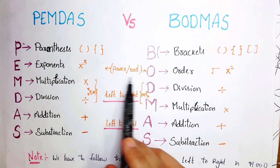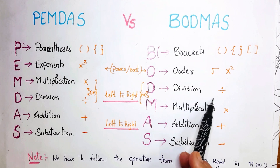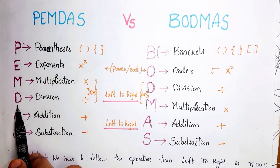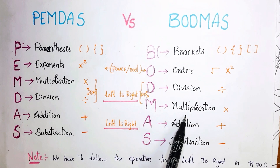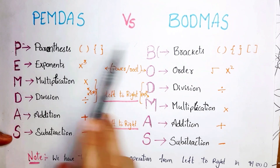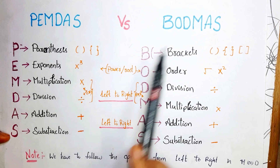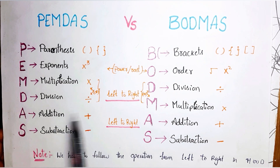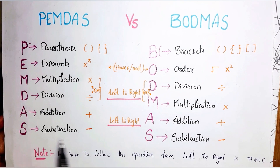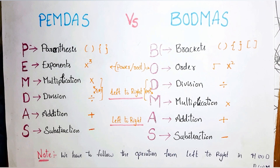So Order covers both powers and roots. M stands for Multiplication. Then D stands for Division. In BODMAS, after Division we get Multiplication — don't get confused. In PEMDAS, Multiplication comes first then Division, whereas in BODMAS we get Division first then Multiplication. Next is Addition, and last is Subtraction. So this is the full abbreviation of BODMAS and PEMDAS.